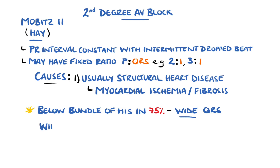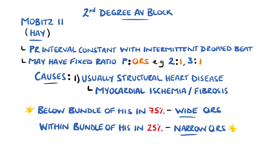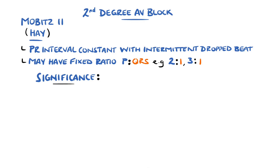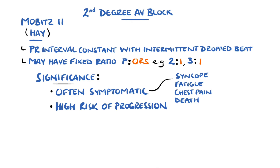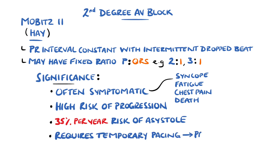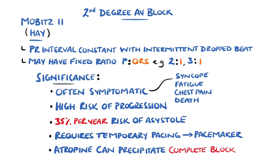However, the defects are in the bundle in 25% of cases, which means a narrow QRS. Mobitz II is often symptomatic as a result of the reduced cardiac output, with syncope, fatigue, chest pain, and in some cases sudden cardiac death. It also has a relatively high progression rate to complete heart block, with a risk of around 35% per year of asystole. It will need temporary pacing until a permanent pacemaker is placed. Importantly, atropine can precipitate third degree heart block in Mobitz type II.